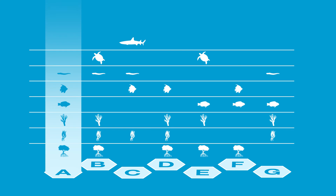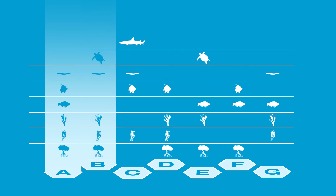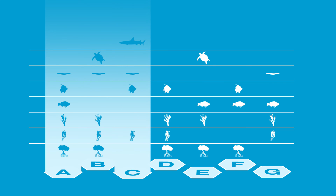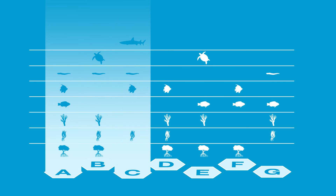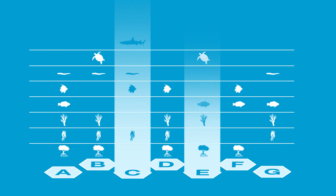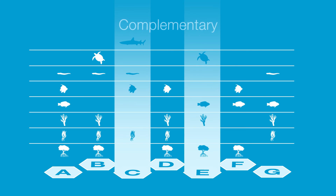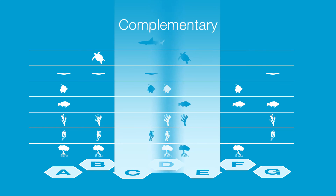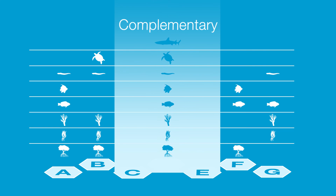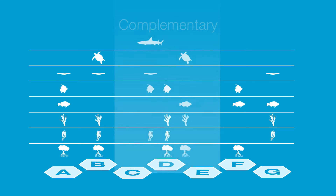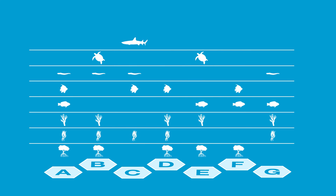It looks like site A might be the best choice because it contains the most features. However, by choosing this, you will also need to select two additional sites to conserve every feature. If you look carefully, you will discover that sites C and E actually conserve all of the features at least once. These two sites are referred to as highly complementary — their features are different, but together they conserve every feature.